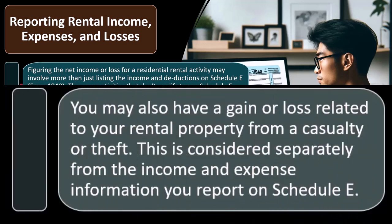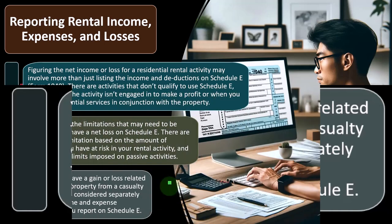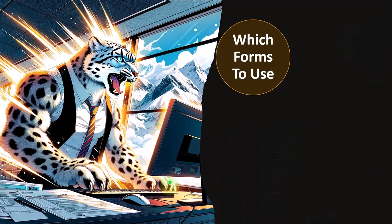You may also have a gain or loss related to your rental property from a casualty or theft. This is considered separately from the income and expense information you report on Schedule E. If you had a casualty or theft situation, that's hopefully an unusual occurrence and needs to be thought about in isolation.